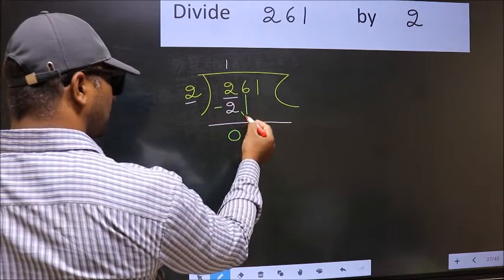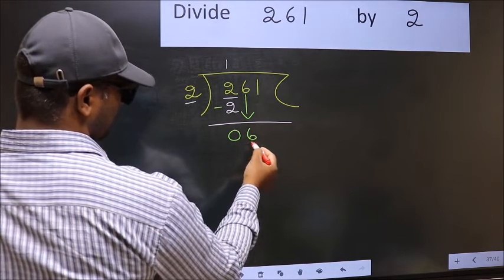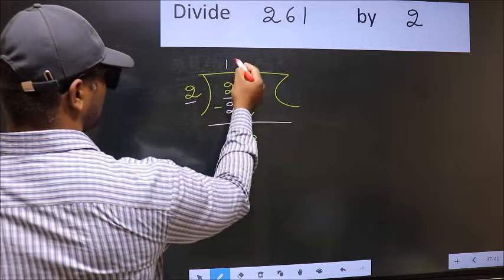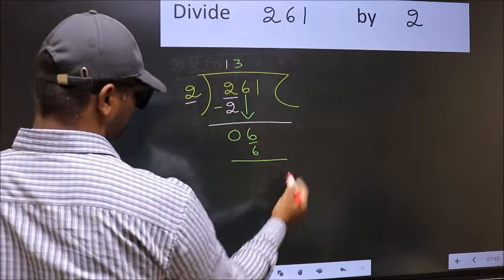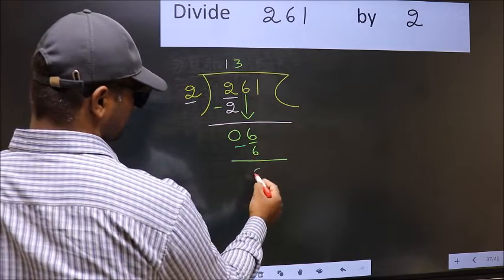Now you should bring down the beside number. So 6 down. Now 6, 2. When do we get 6 in 2 table? 2 3s, 6. Now you subtract. 6 minus 6, 0.